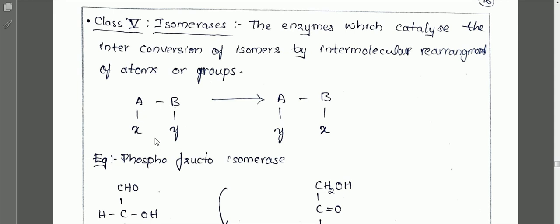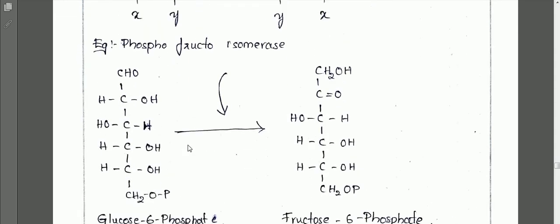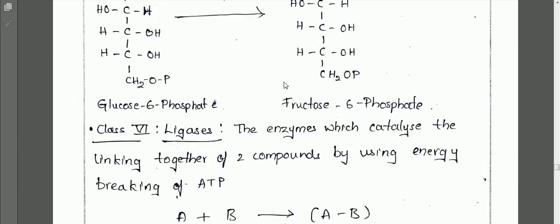The two components are isomeric in nature, and intramolecular rearrangement of atoms takes place. An example is glucose-6-phosphate: phosphoglucose isomerase is the enzyme which acts on the isomer glucose-6-phosphate to produce its isomer fructose-6-phosphate.